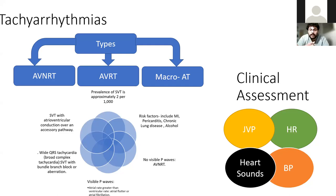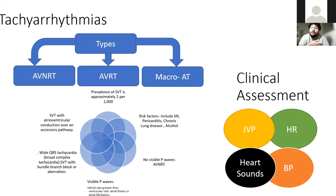Types of tachyarrhythmia include AVNRT, AVRT, and macro re-entry. The main concern with AVRT is Wolff-Parkinson-White syndrome — you may see the classical delta wave. This creates issues because certain drugs that act on the AV node will paradoxically make things worse: by blocking the AV node you increase conduction through the abnormal accessory pathway, which can lead to re-entrant problems and ventricular fibrillation.